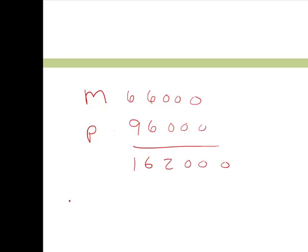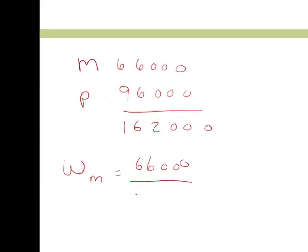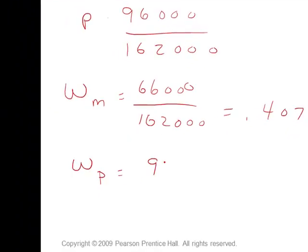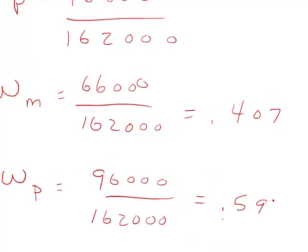remember I had 66,000 in Microsoft and I had 96,000 in Pepsi for a total portfolio value of 162,000. So the weight of Microsoft is 66,000 divided by 162,000 or .407, about 41%, and the weight in Pepsi is 96,000 divided by 162,000 or a weight of about 59%.